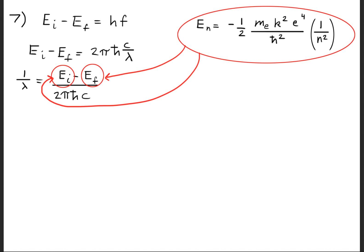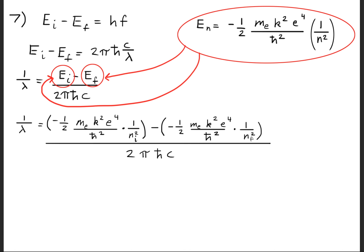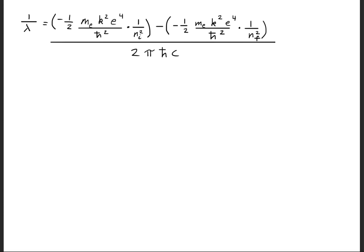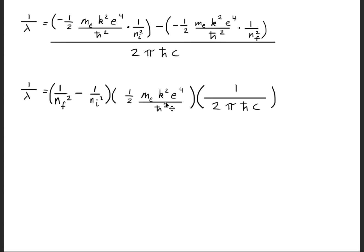We plug the hydrogen energy level formula into each energy term to get the inverse wavelength in expanded form. Simplifying, we factor out one-half times m times k squared times e to the fourth over h-bar squared, leaving one over n-final squared minus one over n-initial squared. The negative sign accounts for the switch from initial minus final to final minus initial in the squared terms.